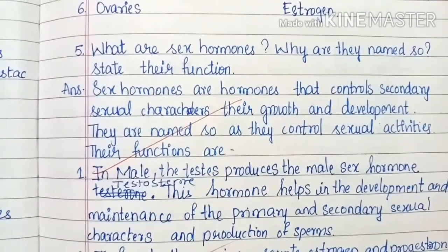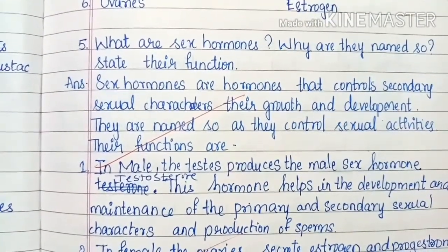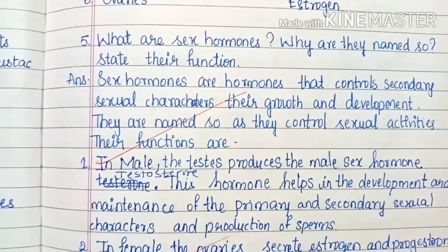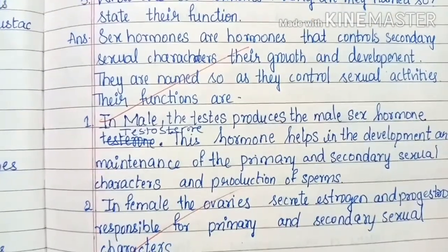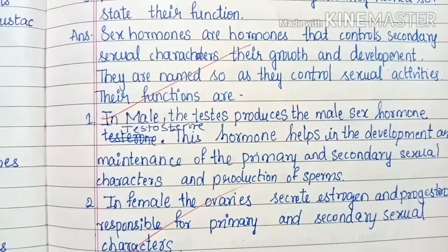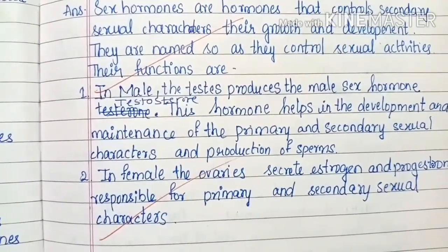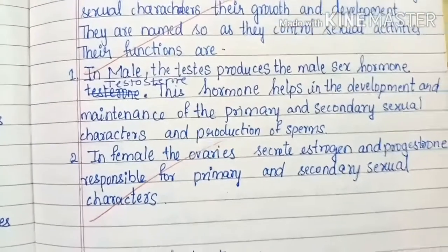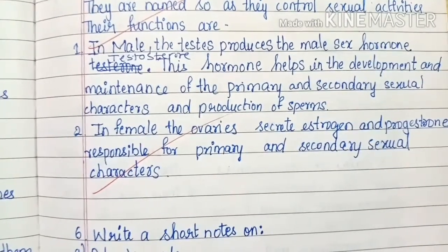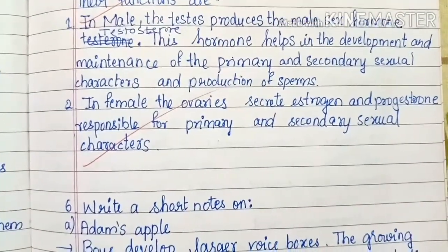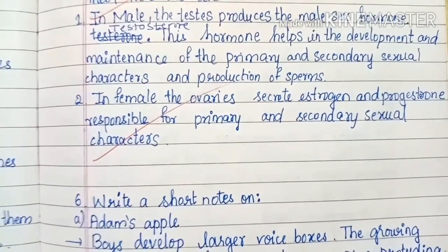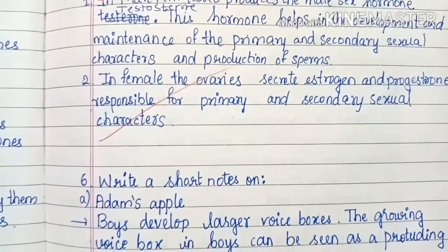What are sex hormones? Why are they named so? State their function. Sex hormones are hormones that control secondary sexual characters, their growth and development. They are named so as they control sexual activities. In males, the testis produces the male sex hormone testosterone, which is involved in the development and maintenance of primary and secondary sexual characters and production of sperms. In females, the ovaries secrete estrogen and progesterone, responsible for primary and secondary sexual characters.